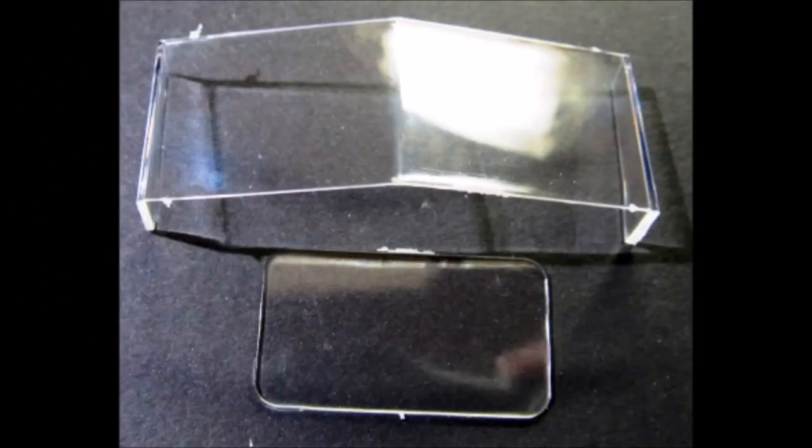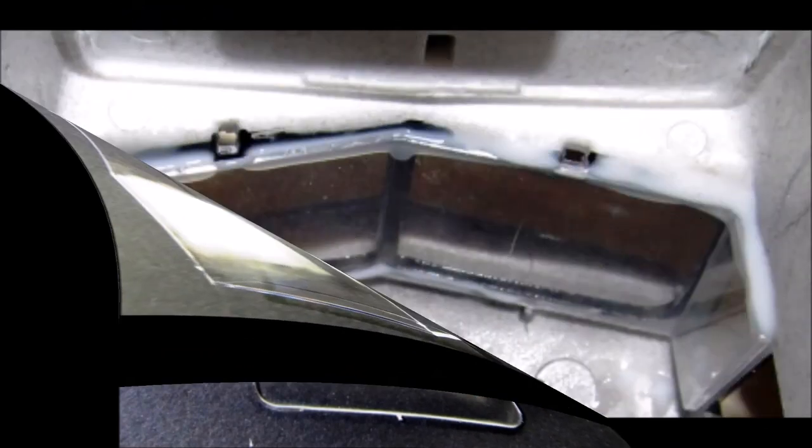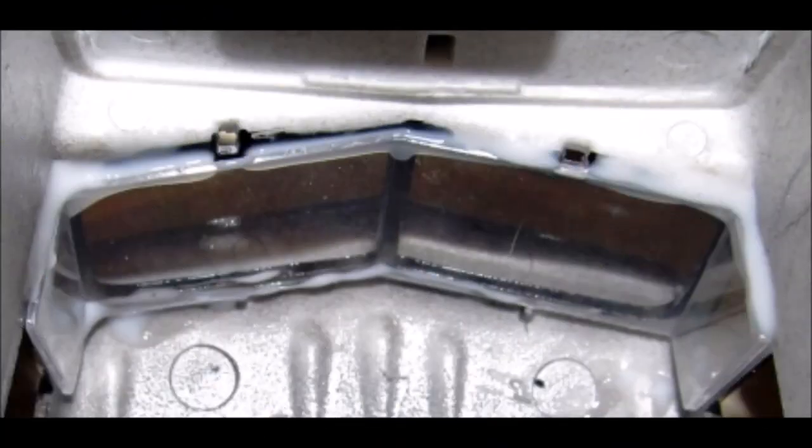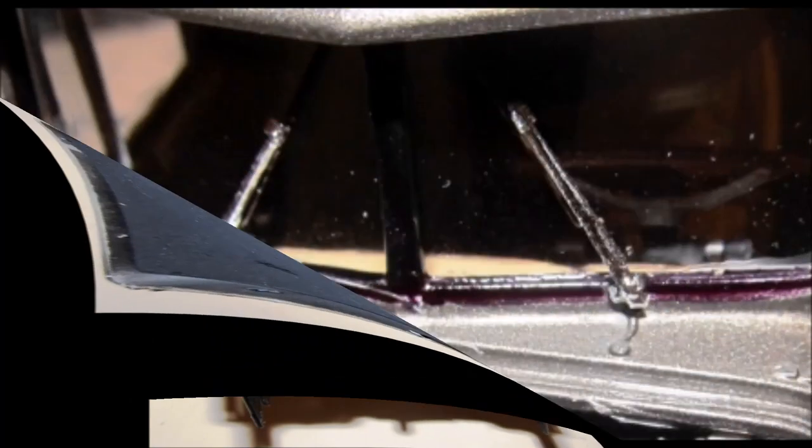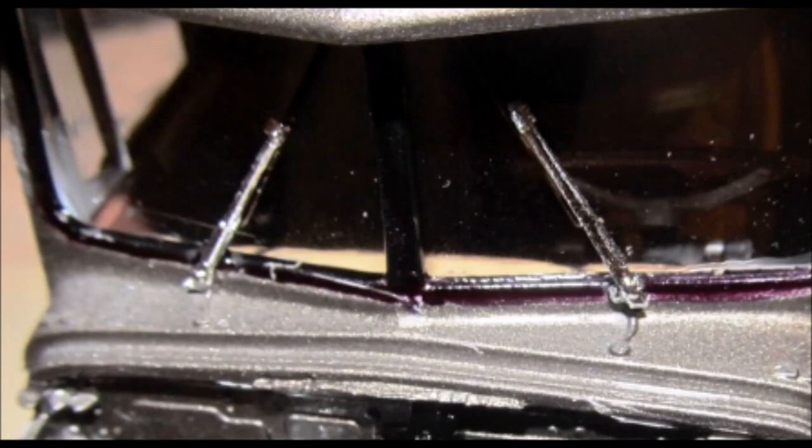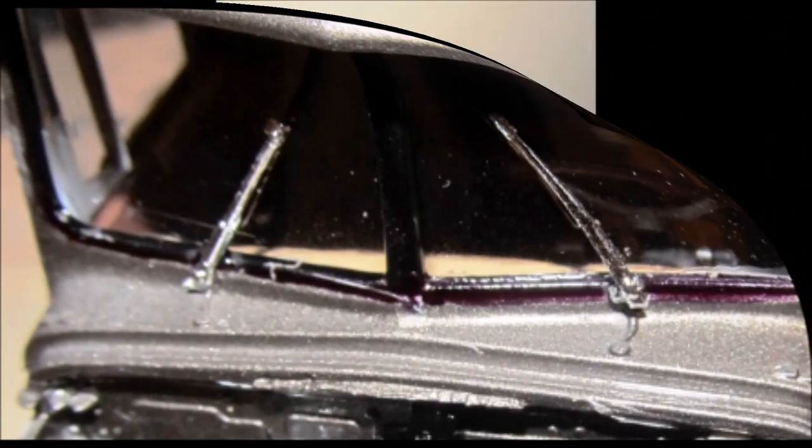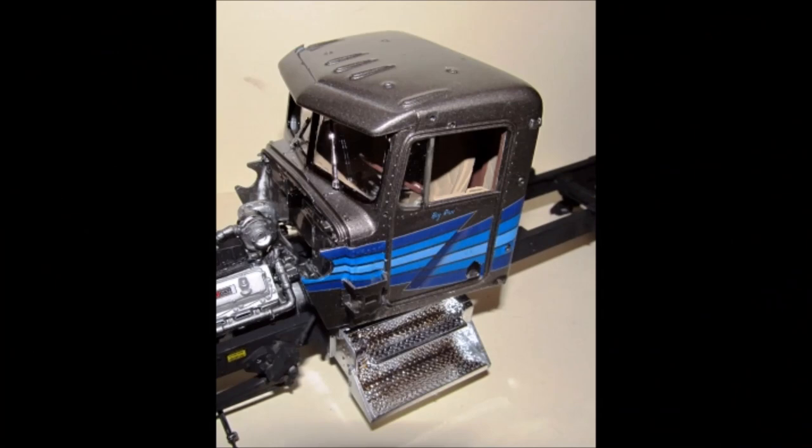I got out the window glass and dipped it into some of the Pledge floor polish. And then wicked off the excess and let it dry for a clean clear look. Then after that was dry, I used some white glue to install the windows into the cab. After the windows have dried into place, flip it over and install the interior tub into the cab. Glue the windshield wipers into place. Install the cab onto the frame by using the front tabs and then onto the back wall.